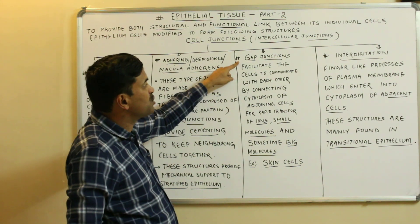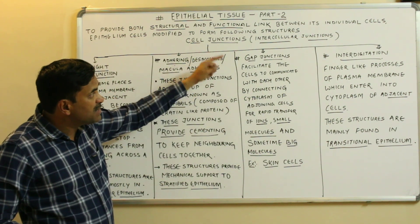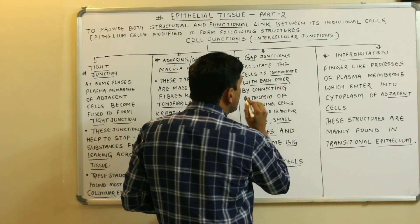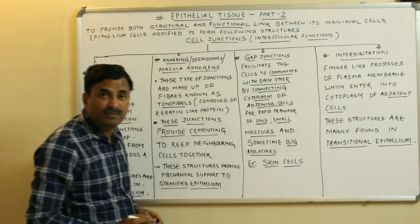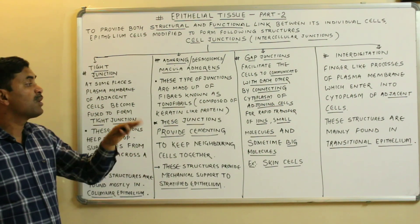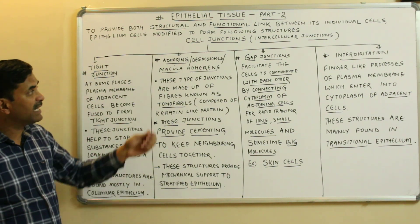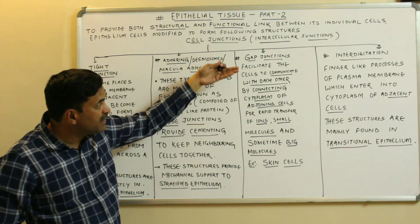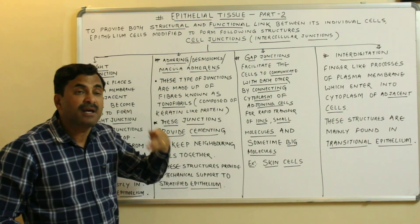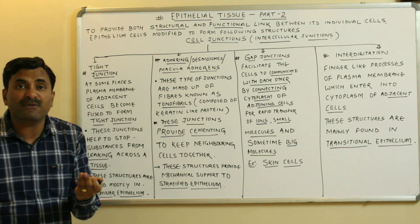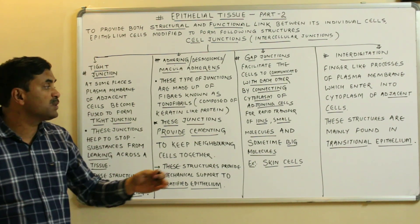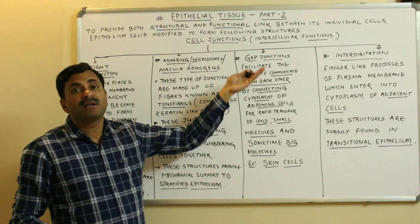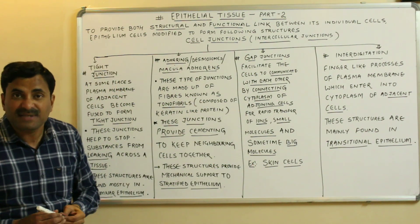The third type is gap junctions. These junctions facilitate cells to communicate with each other by connecting the cytoplasm of adjoining cells for the rapid transfer of ions, small molecules, or sometimes big molecules. Gap junctions are generally found in skin cells.